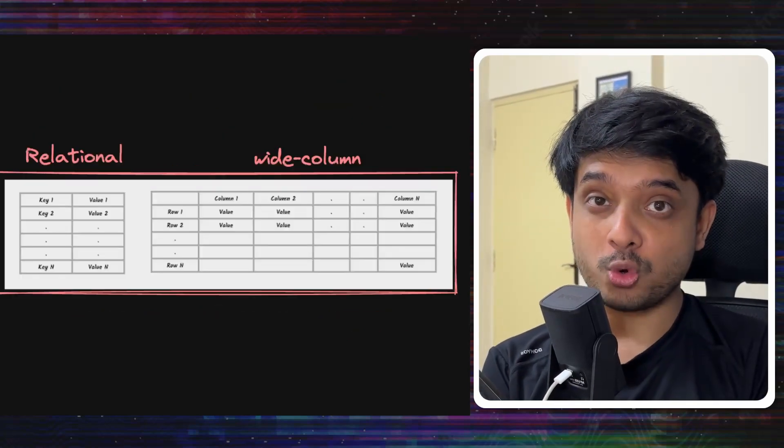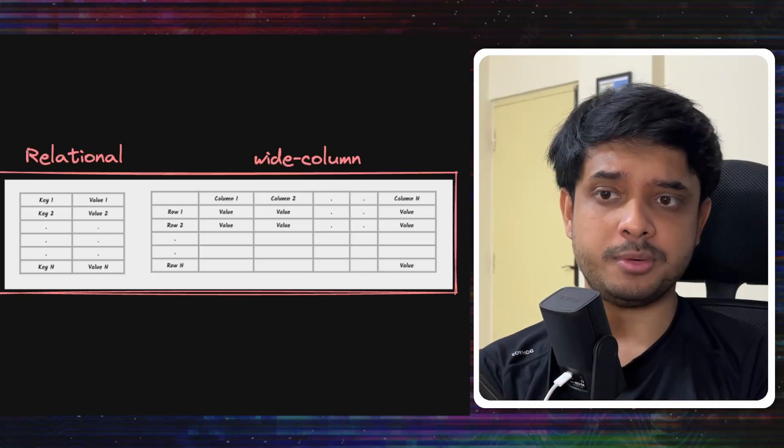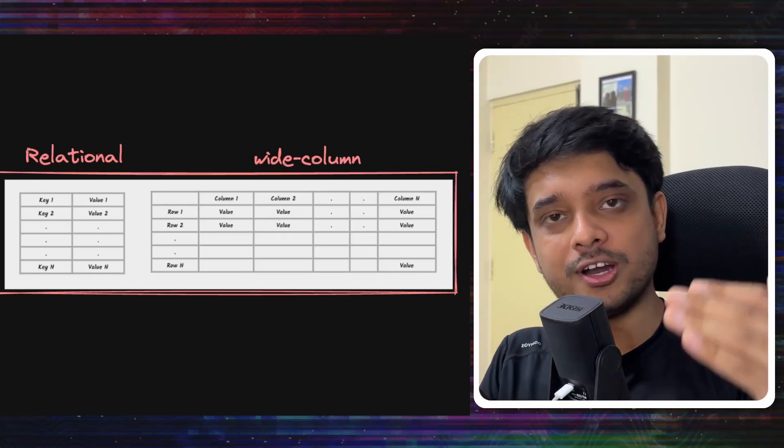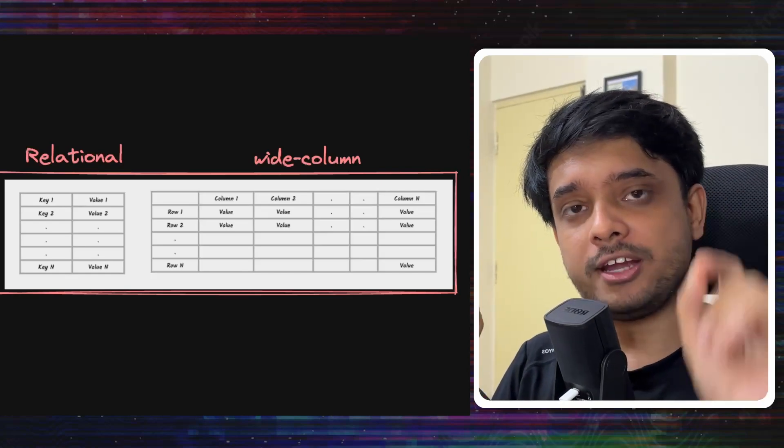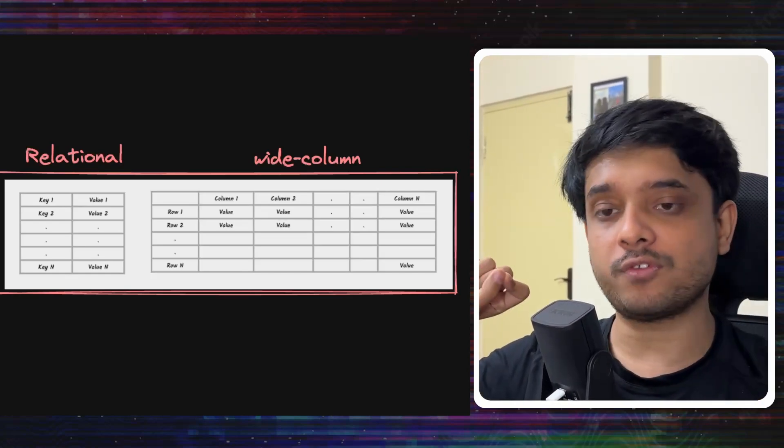First let's talk a bit about wide column database. Look at this diagram which compares a standard RDBMS data model with a wide column database. The data is still modeled as rows and columns but you see in a wide column database each row can have its own set of columns.